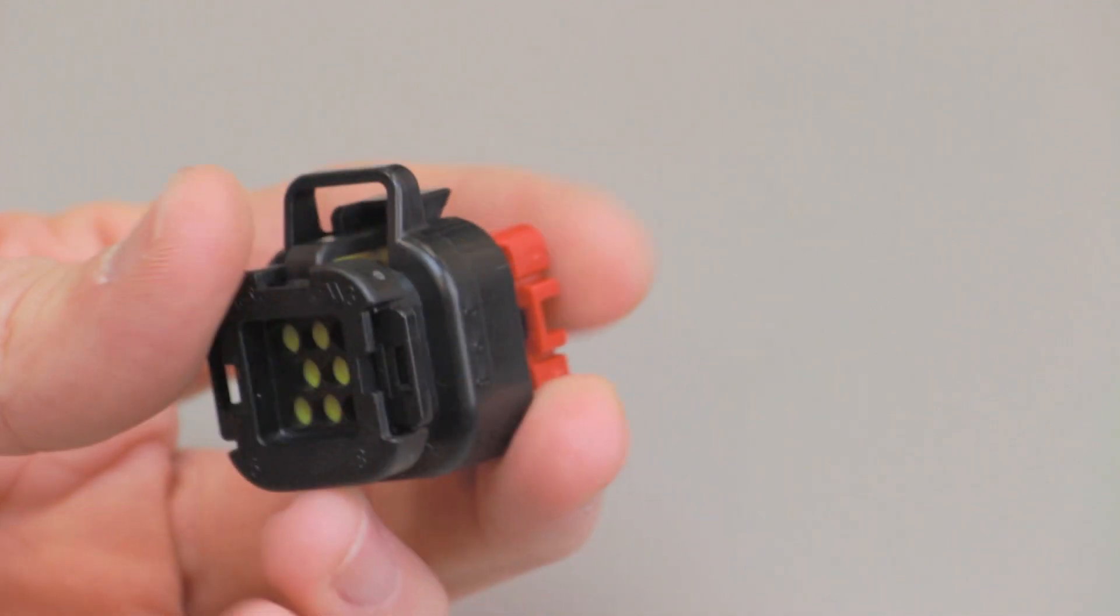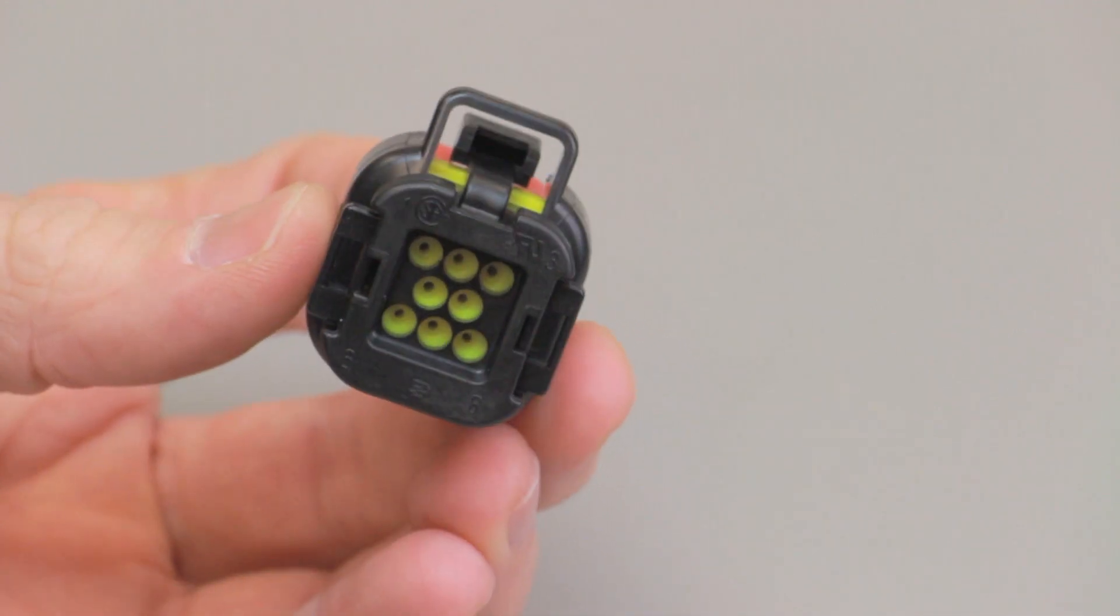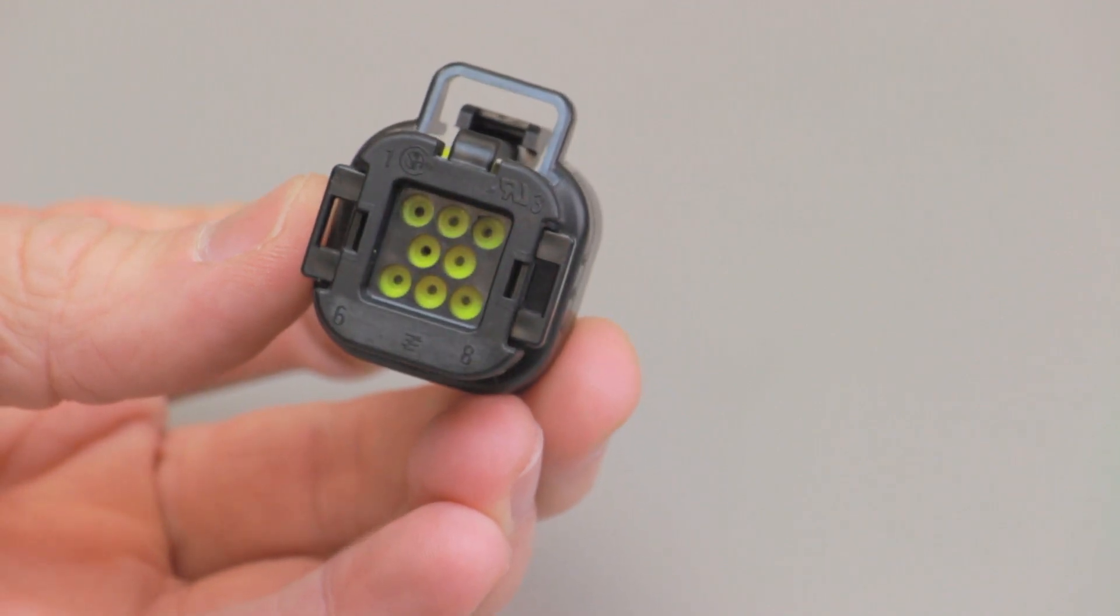Each contact cavity contains a wire seal that helps protect the cavity from contaminants. During contact insertion, the wire seal is pierced as the contact passes through the cavity.